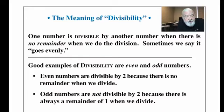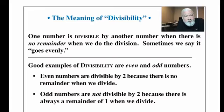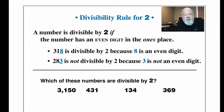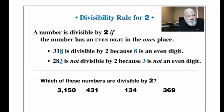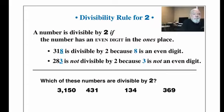One really good example of divisibility that most students learn early in elementary school is the rule for two. Even numbers can be divided evenly by two, so every even number is divisible by two. Odd numbers, on the other hand, always give remainder one when divided by two. The divisibility rule for two is straightforward: a number is divisible by two if it has an even digit in the ones place. For example, 318 is divisible by two, whereas 283 is not.